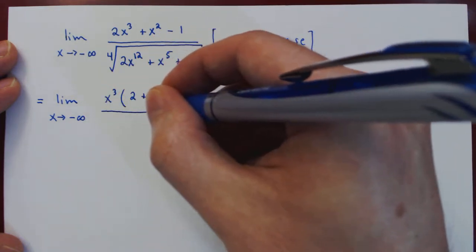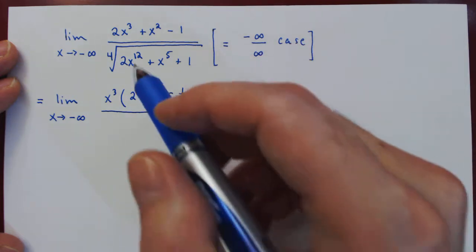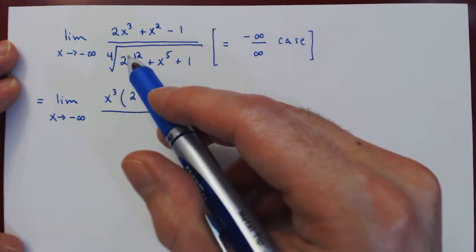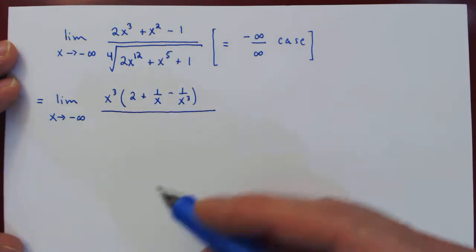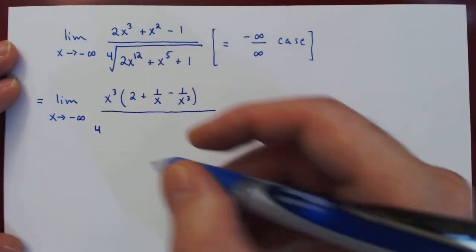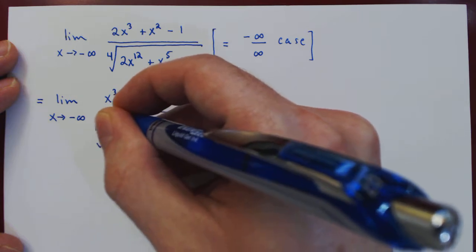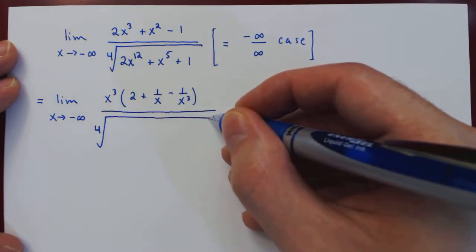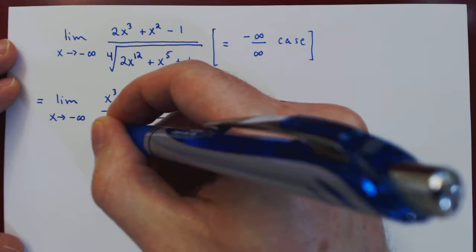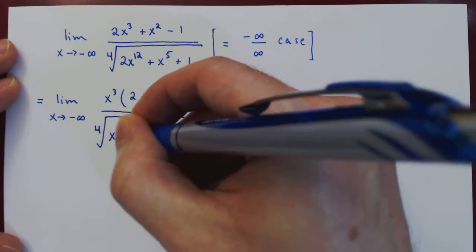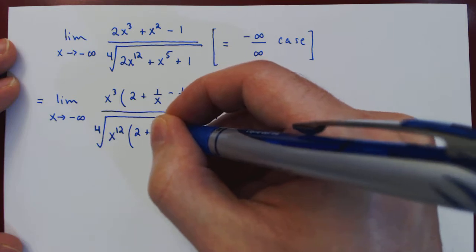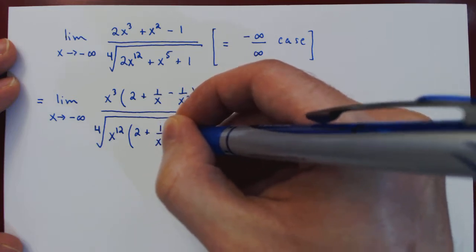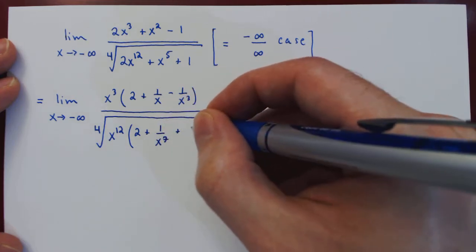On the denominator, if we look inside the fourth root, the largest term is x¹², and so we factor it from within the fourth root. And then we're left with 2 plus 1/x⁷ plus 1/x¹².